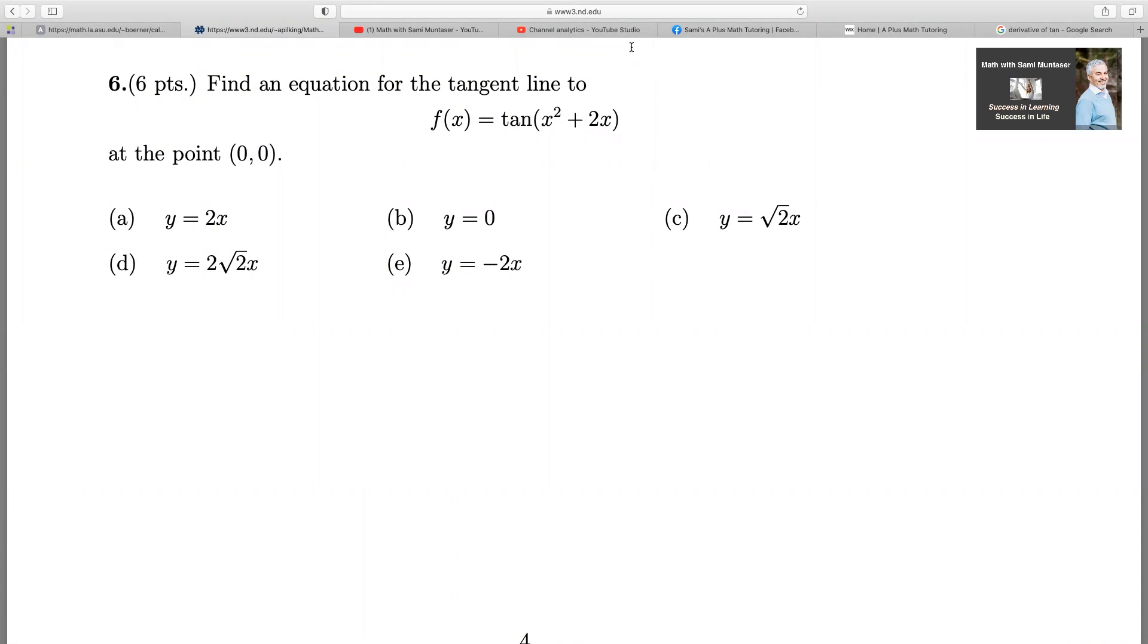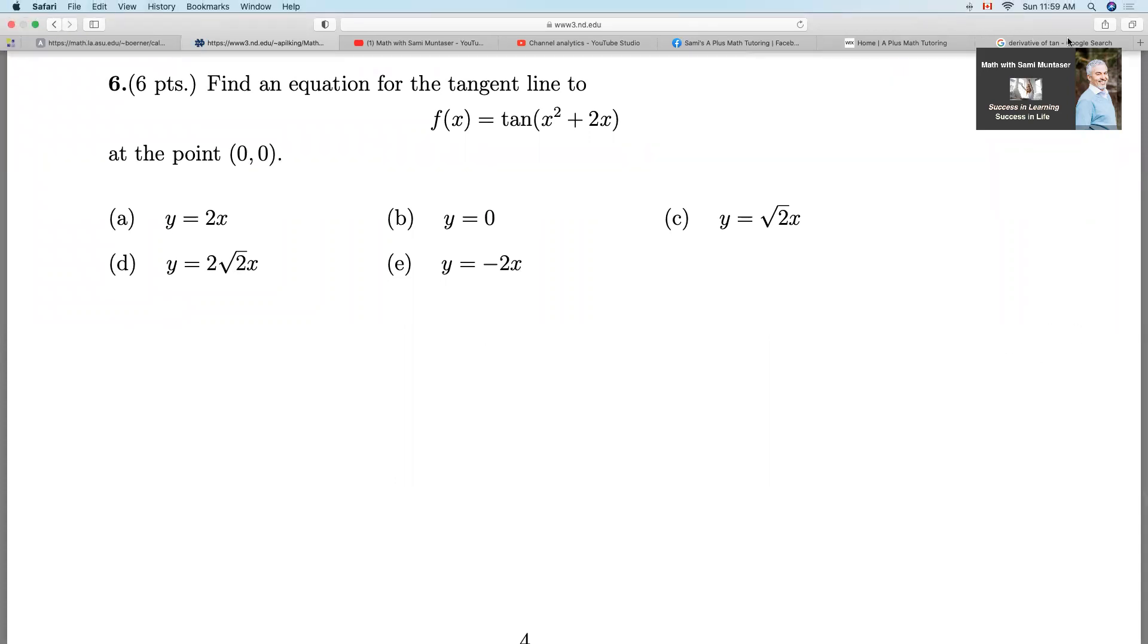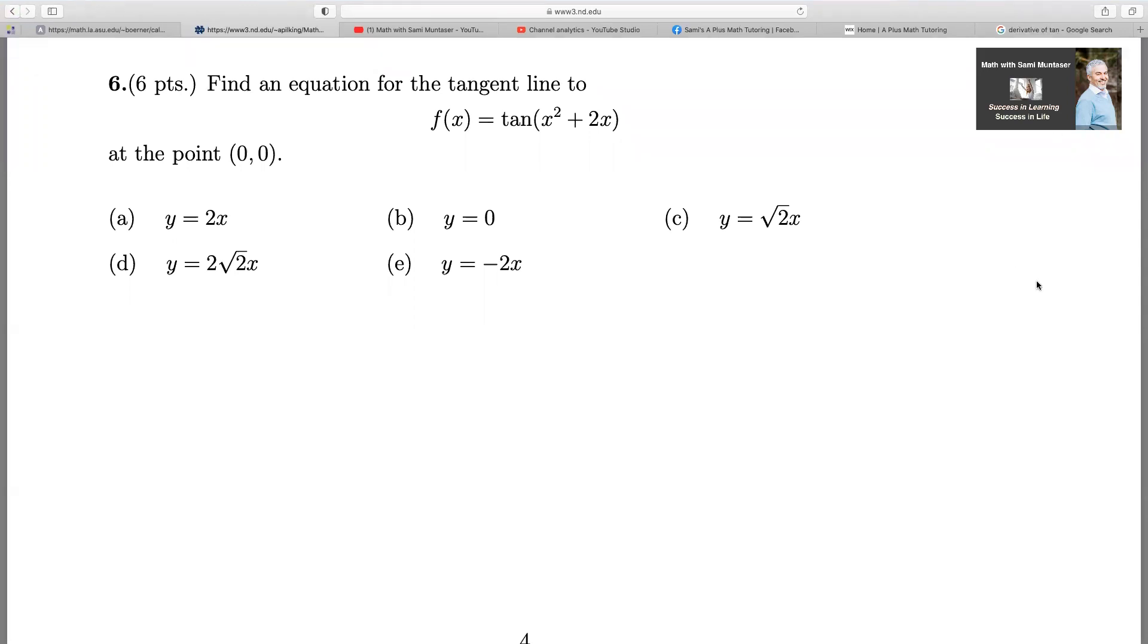So here's the question. When they give you this kind of question, what they want you to do, you have a tan graph and somewhere along the curve at 0, 0, you draw a tangent and what you want to do, a tangent is a straight line. So you want to find the equation of that straight line.